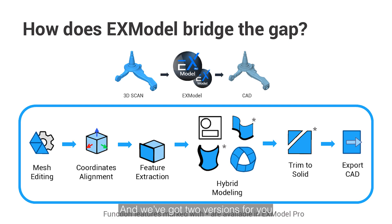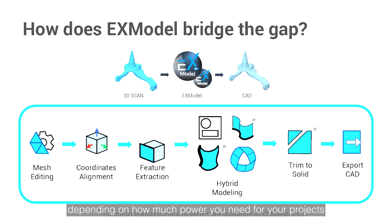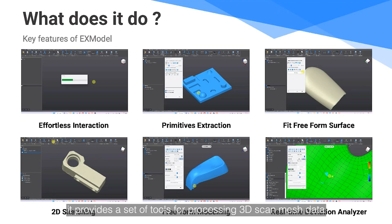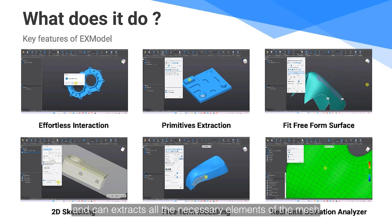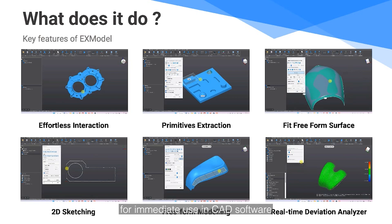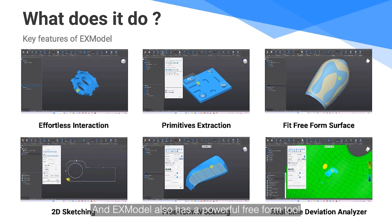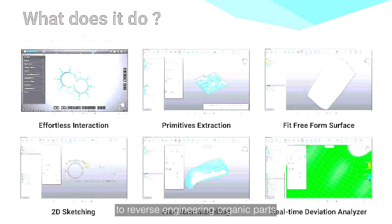We've got two versions for you — Xmodo and Xmodo Pro — depending on how much power you need for your projects. Xmodo provides a set of tools for processing 3D scan mesh data and can extract all the necessary elements of the mesh for immediate use in CAD software. It also has a powerful fit-from tool for reverse engineering organic parts.